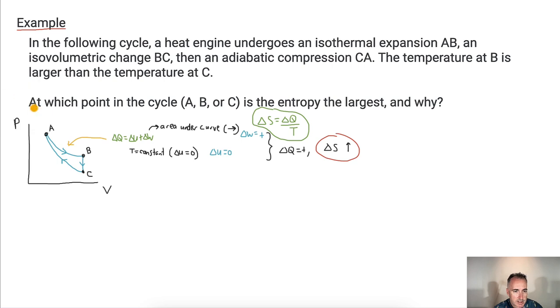Now let's look at this case right here. We'll do the same treatment. Delta Q equals delta U plus delta W. What do we know about the temperature? We were told that the temperature at B is larger than the temperature at C. So to go from B to C, the temperature must go down. What does that mean? That means delta U must be negative.